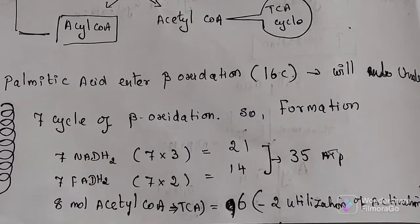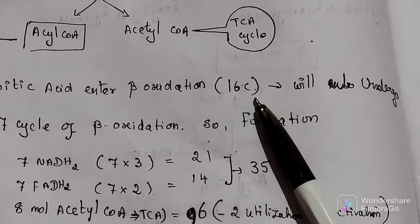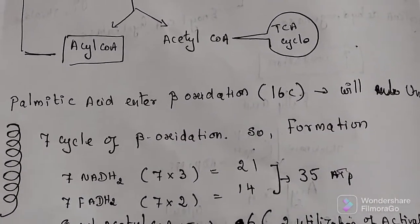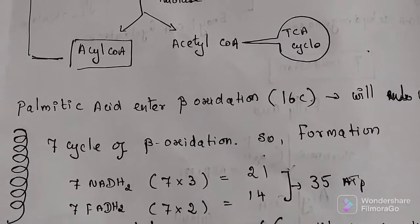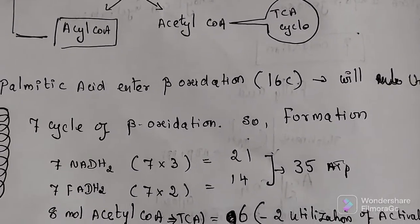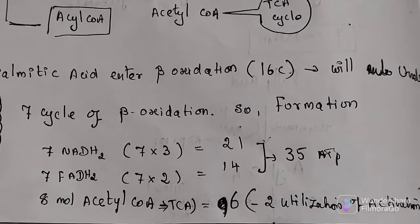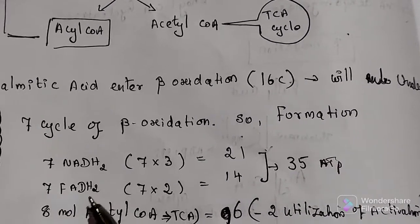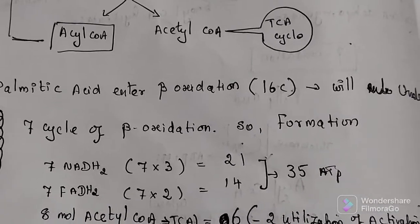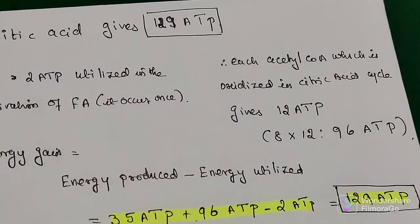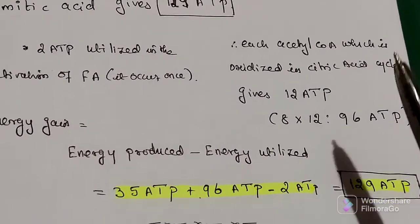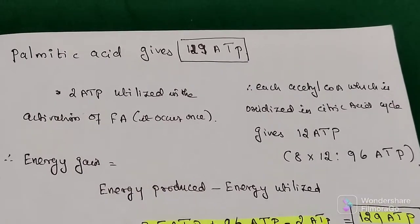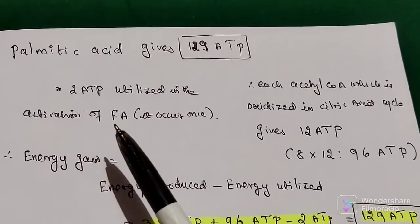Palmitic acid, a 16-carbon fatty acid, undergoes 7 cycles of beta oxidation. This produces 7 NADH2, 7 FADH2, and 8 molecules of acetyl-CoA. Each acetyl-CoA, when oxidized in the citric acid cycle, gives 12 ATP molecules. So 8 × 12 = 96 ATP molecules. Two ATP molecules are utilized for the activation of the fatty acid.